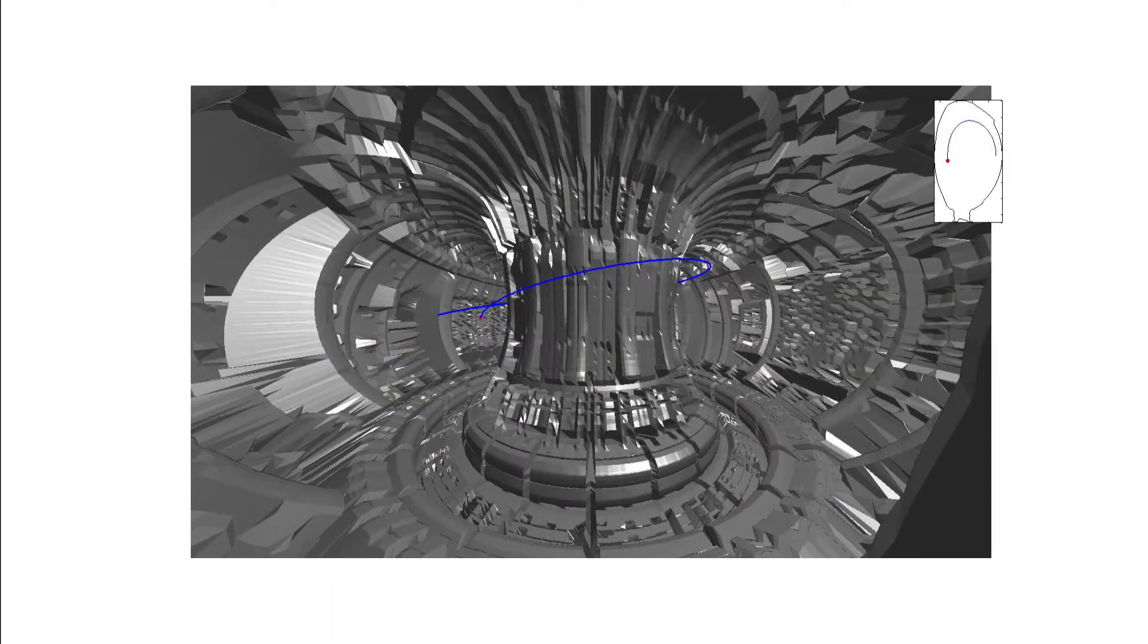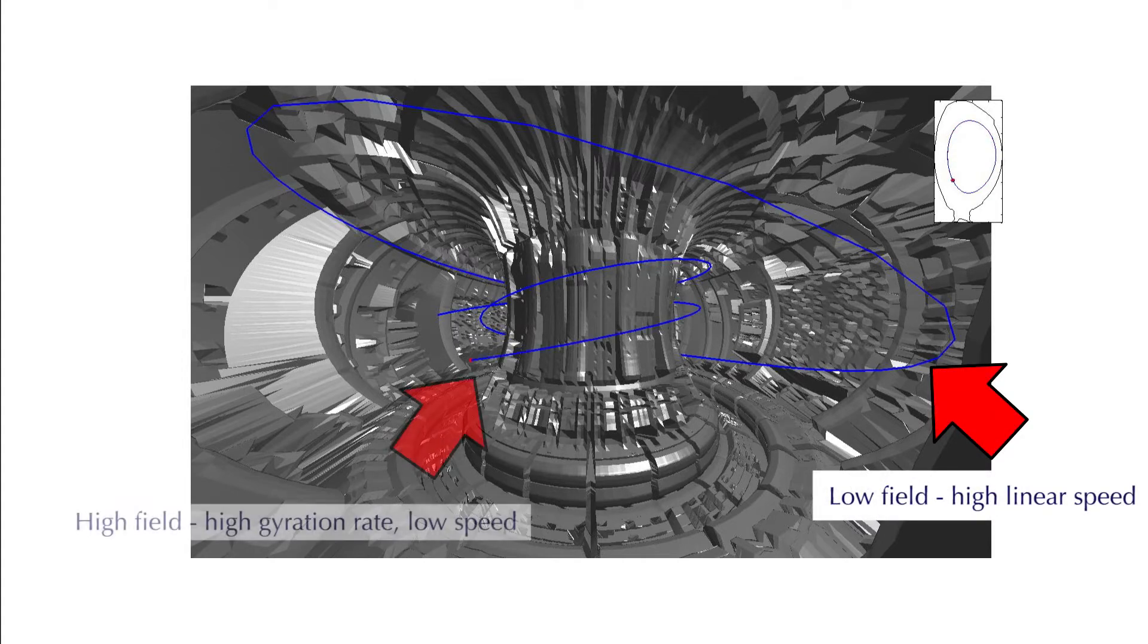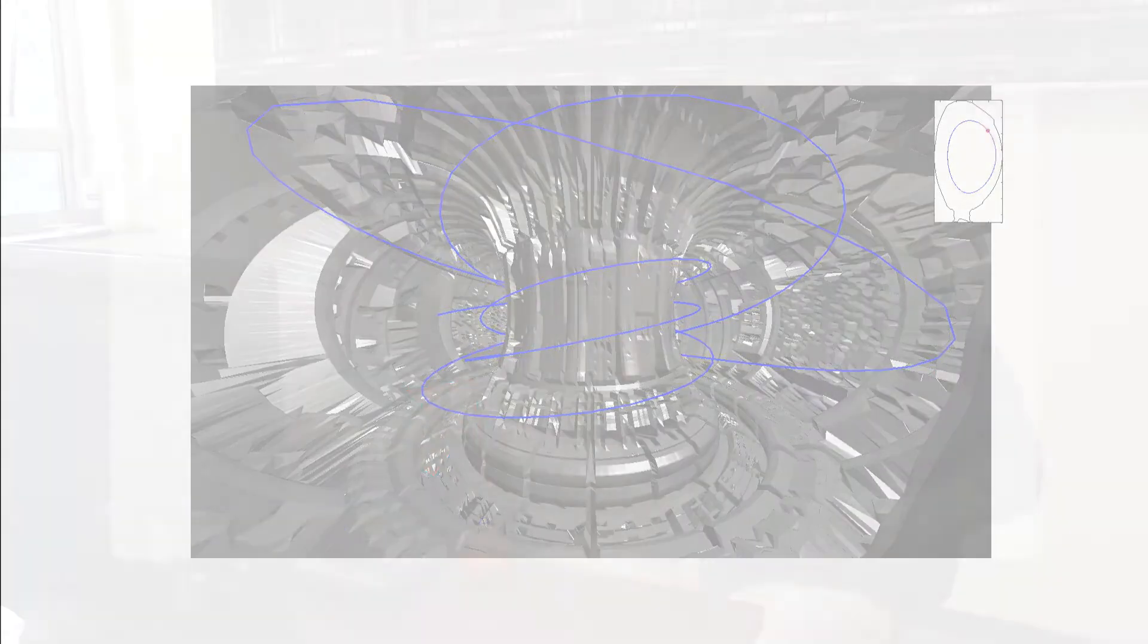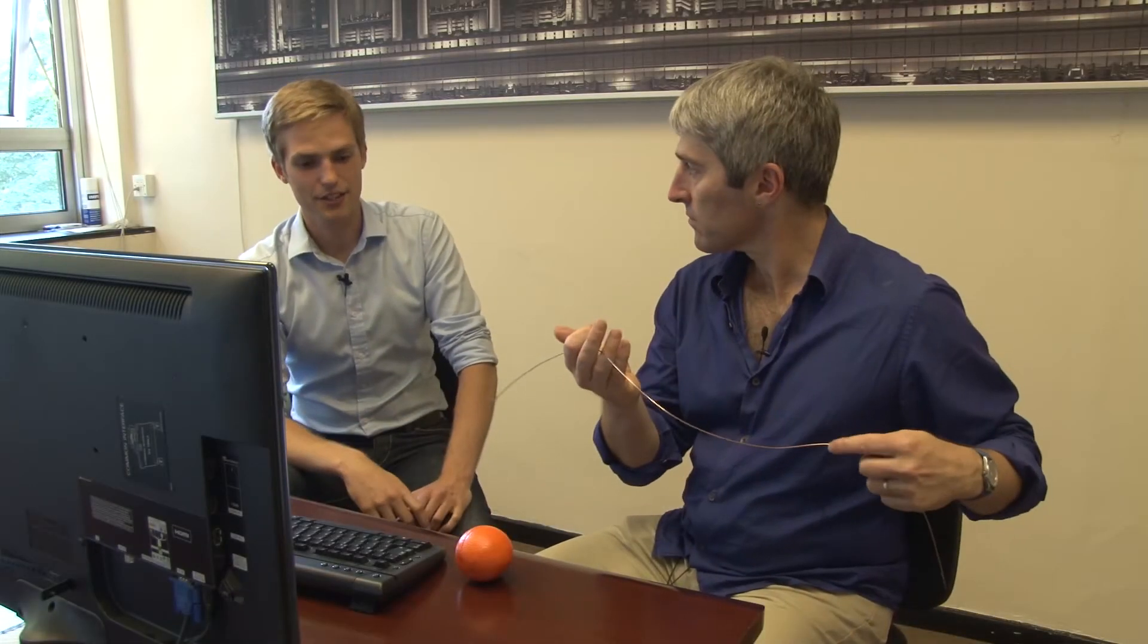But rotate faster. But rotate faster. You've got the same amount of kinetic energy. And what can happen actually is that if it doesn't have enough velocity in the direction of the magnetic field, it can stop and bounce back. Right. So slow moving ones actually bounce.